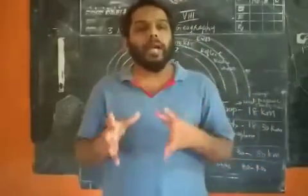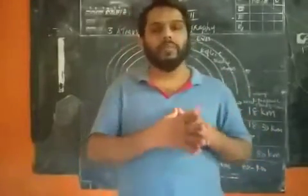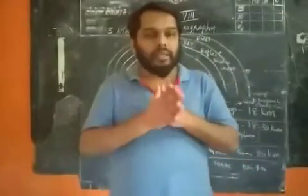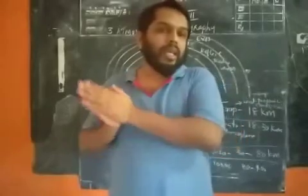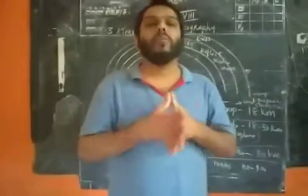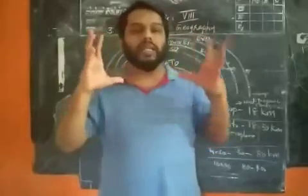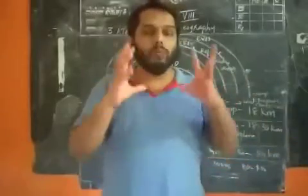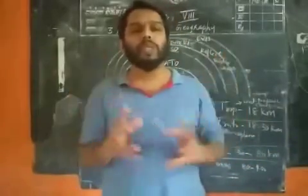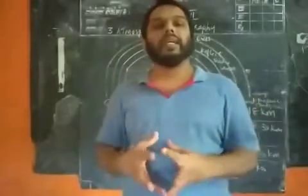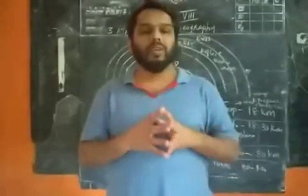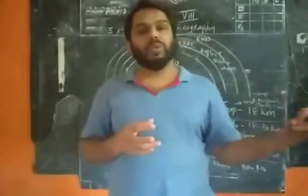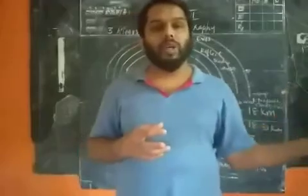Earth is the third planet in the solar system. The order is: Mercury, Venus, Earth, Mars, Jupiter, Saturn, Uranus, and Neptune — these are the eight planets. Our earth is neither very far away nor very close to the sun. Because of this optimum distance, our earth has some unique features or specialities compared to other planets.